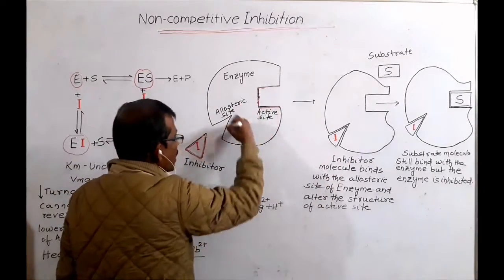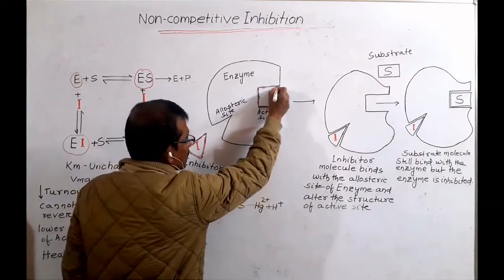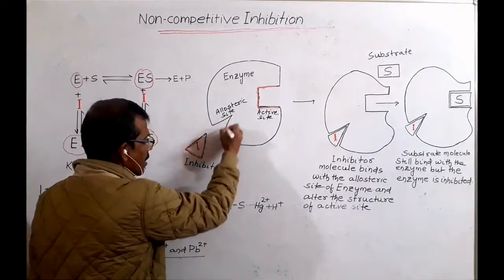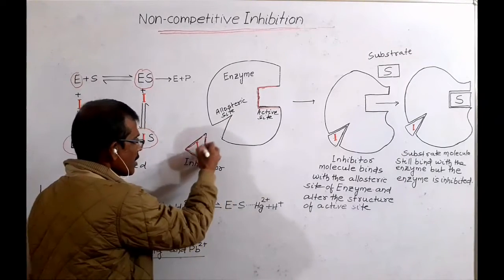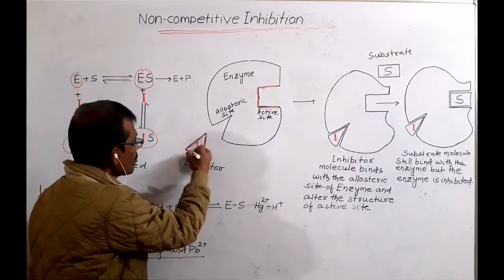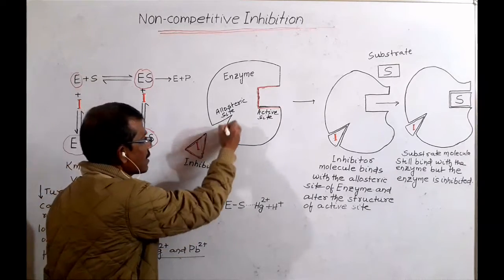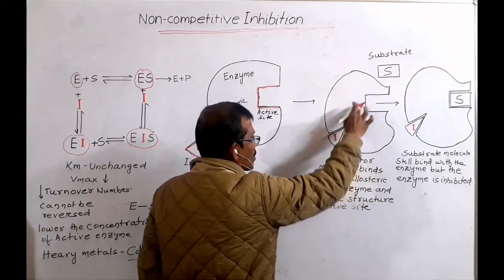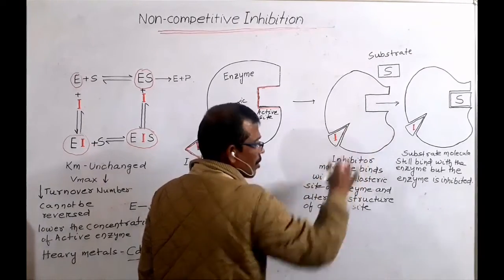This is the enzyme molecule, this specific site is the active site, and this is the allosteric site, and this is the inhibitor. The binding of the inhibitor at the allosteric site brings about some conformational change in the enzyme molecule.